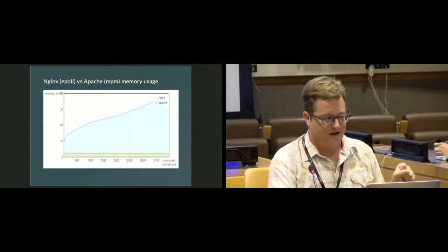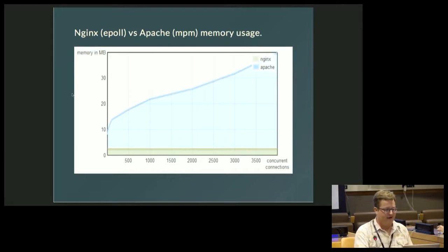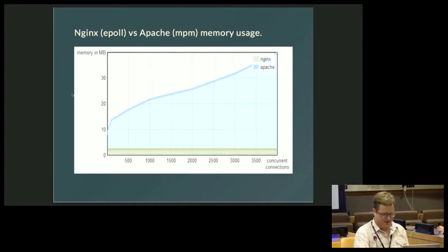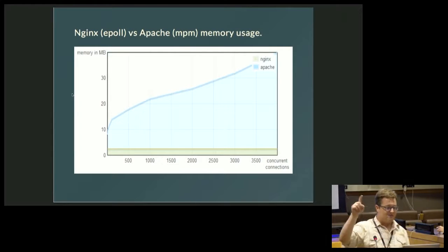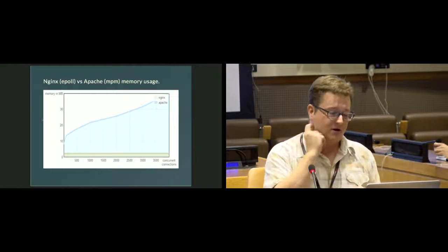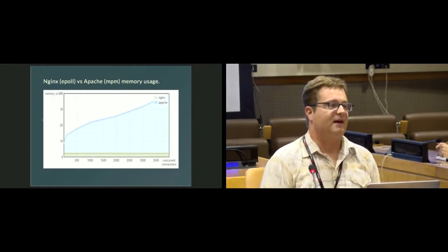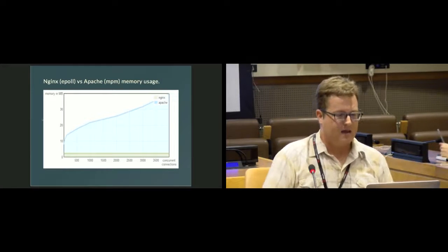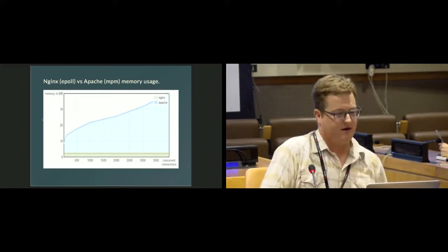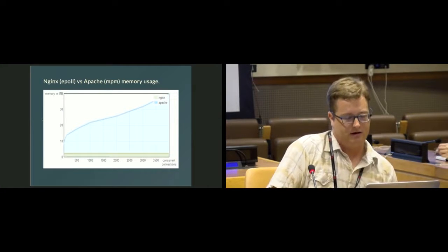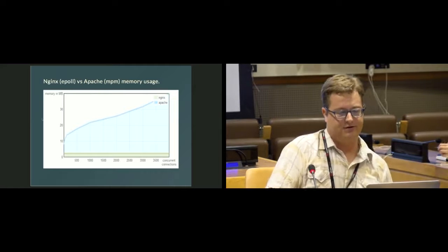Here's an example of what this looks like in terms of memory usage. We have the Apache multi-processing module in blue, and NGINX which uses ePoll at the bottom. Memory usage for Apache goes up quite a bit as we start talking about concurrent processes, because it has to spin up a whole new process for each new connection — this is incredibly expensive. This is why NGINX, or Apache with a multi-threading module, would be far more superior in terms of memory usage.